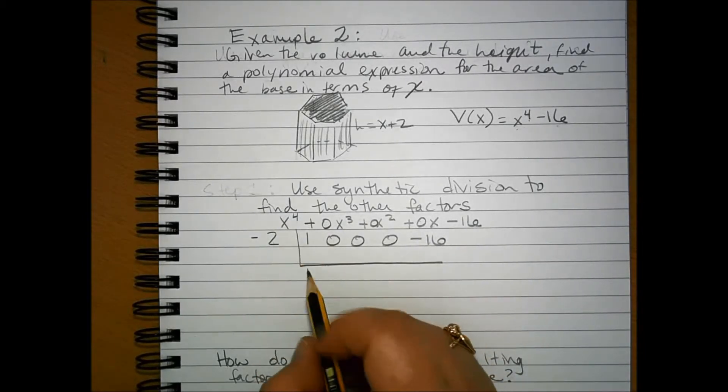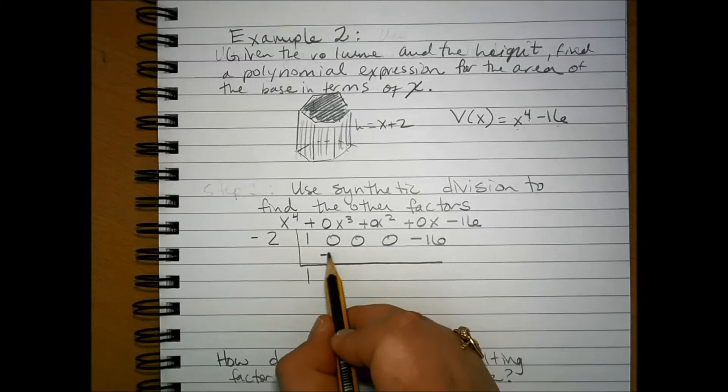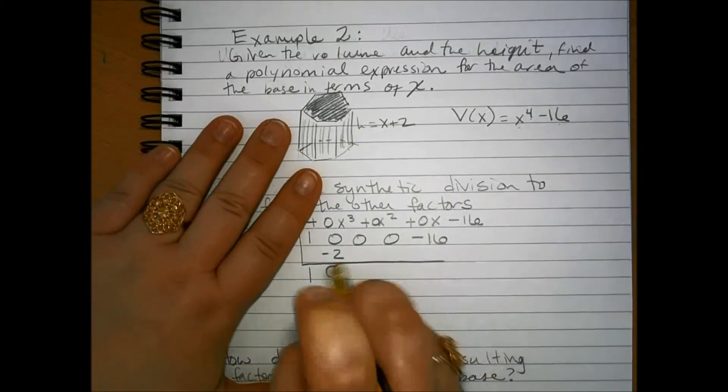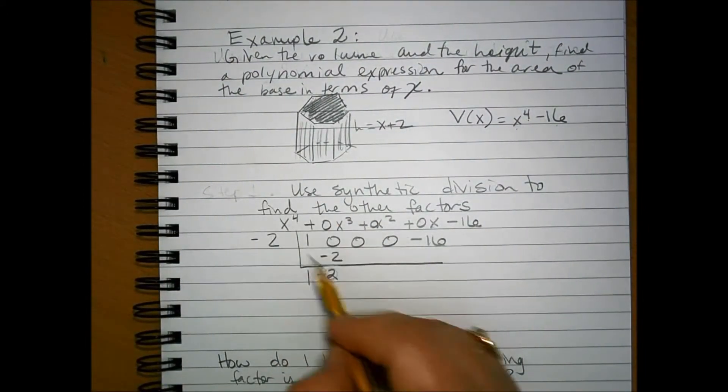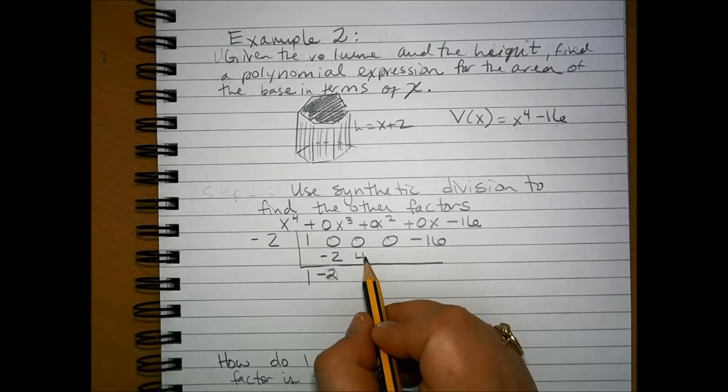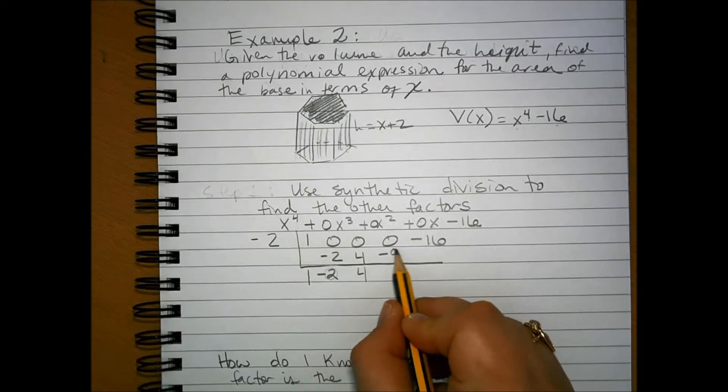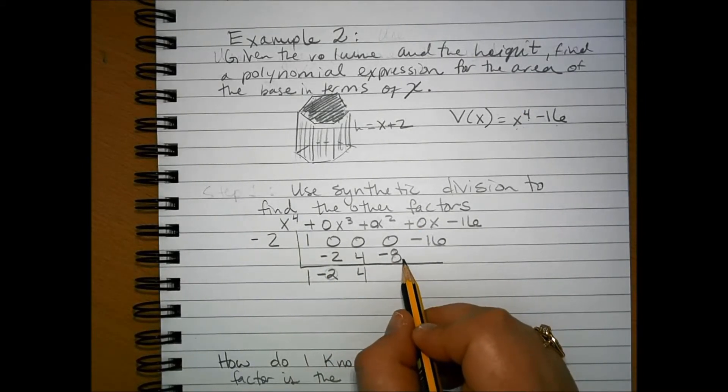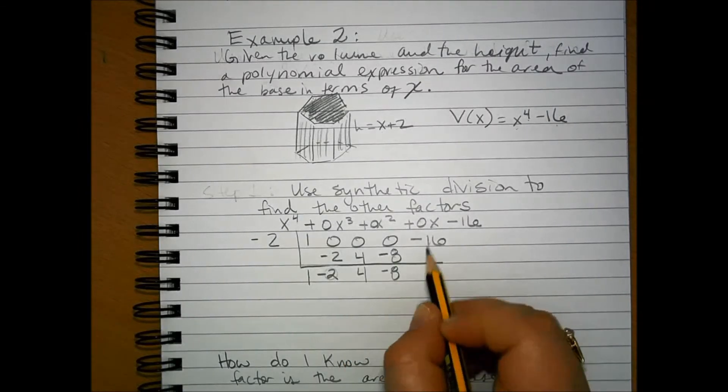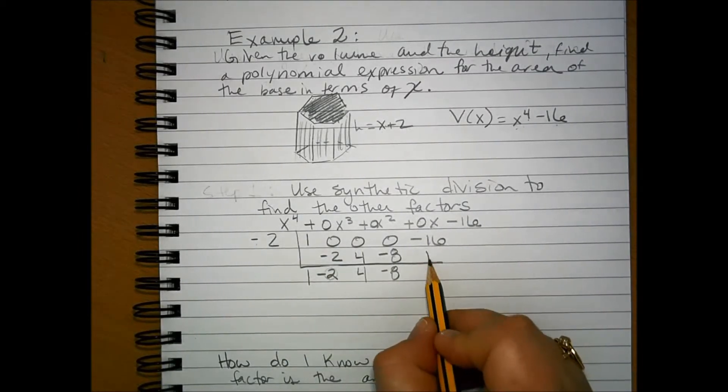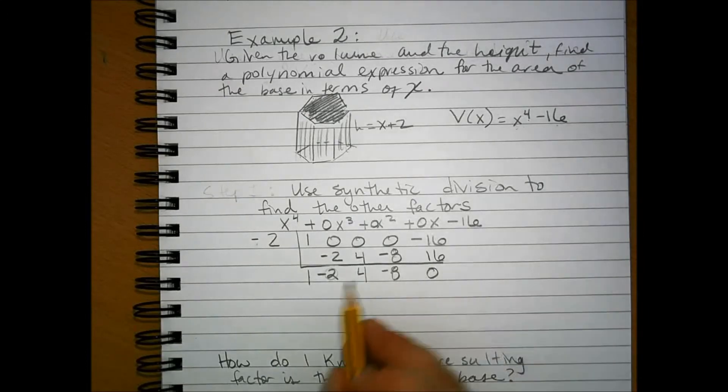Negative 2 times negative 1 is negative 2, plus 0 is negative 2. Negative 2 times 2 is 4, negative 2 times 4 is negative 8, plus 0 is negative 8, and negative 2 times negative 8 is 16, and the result is 0.